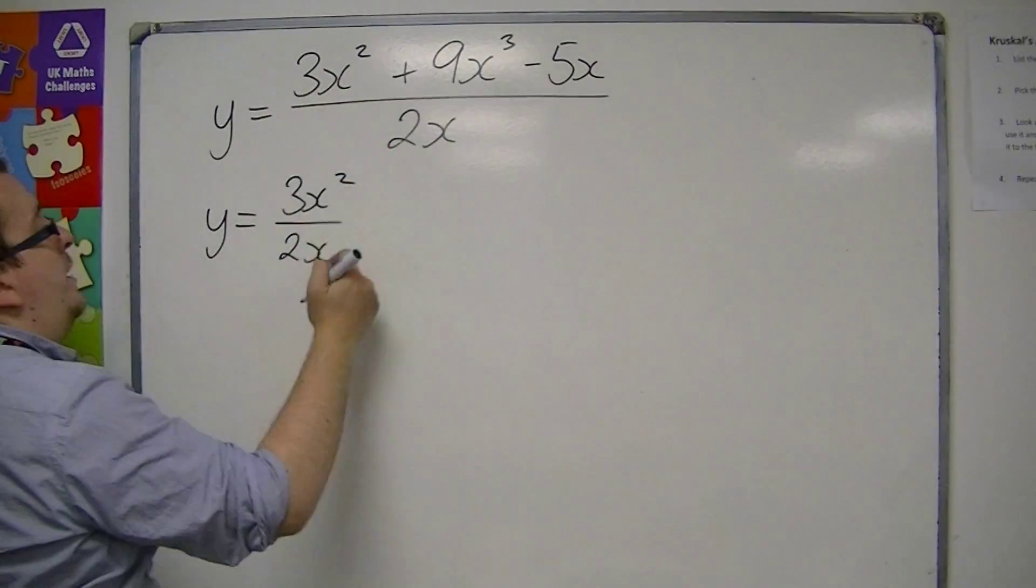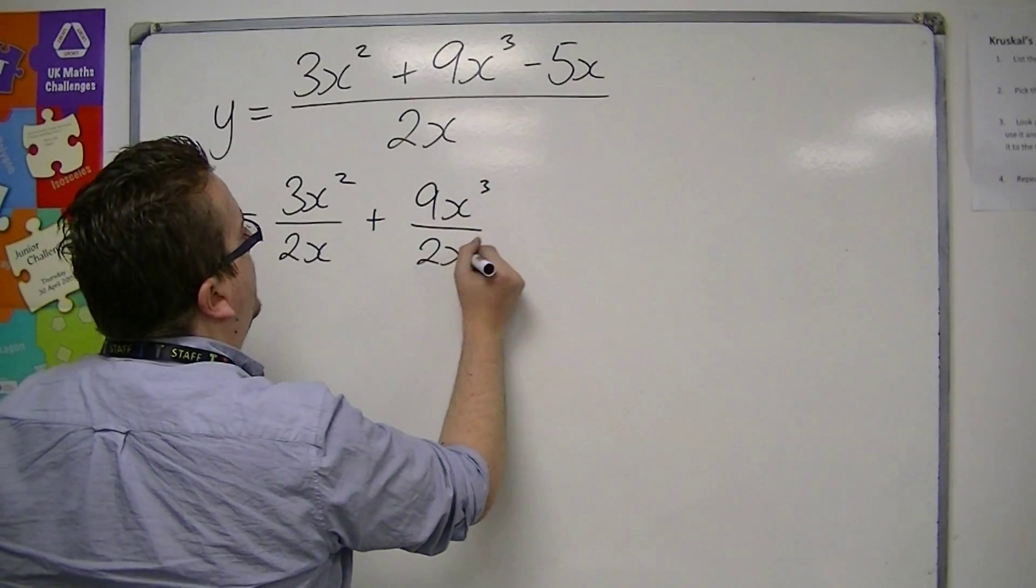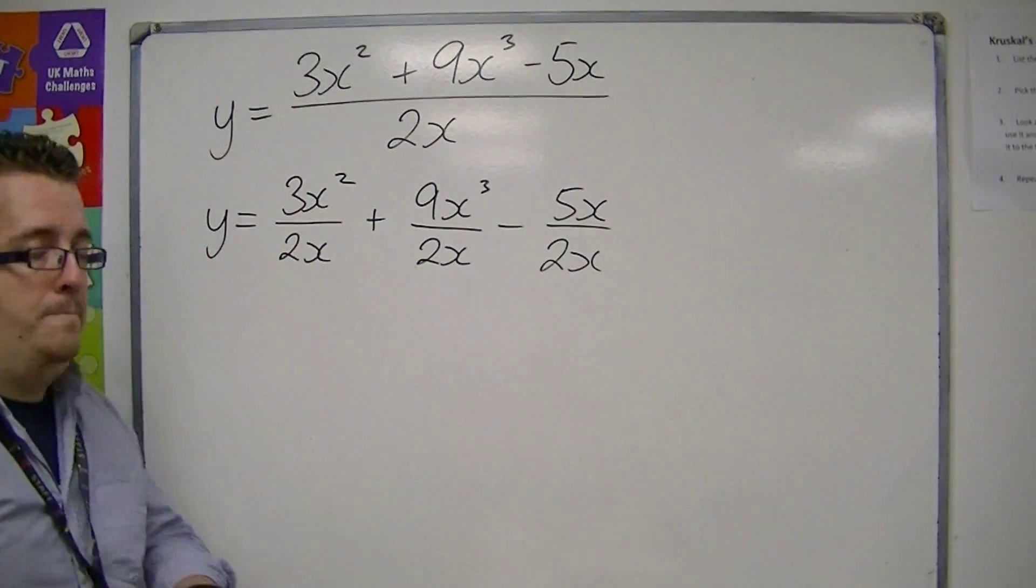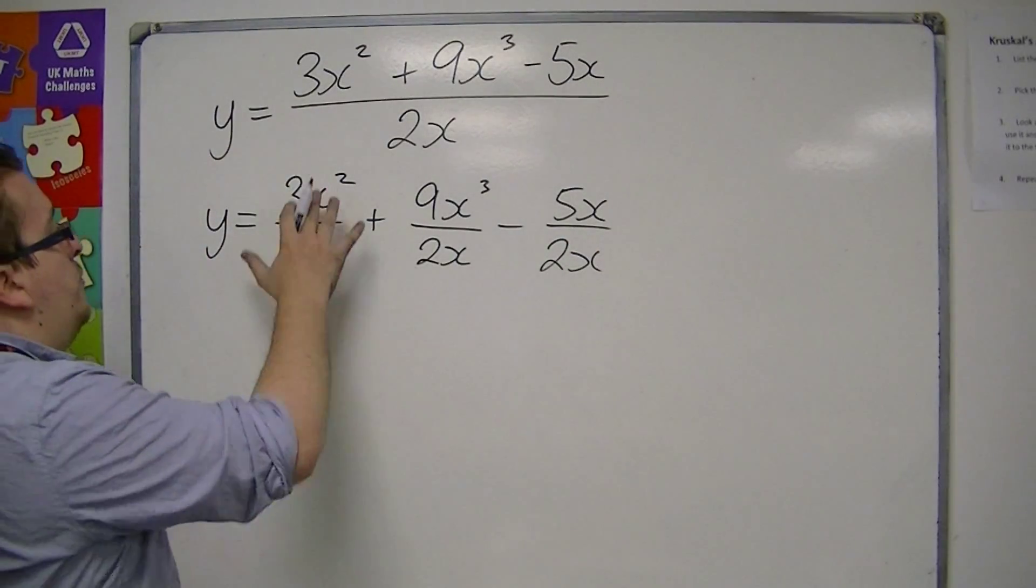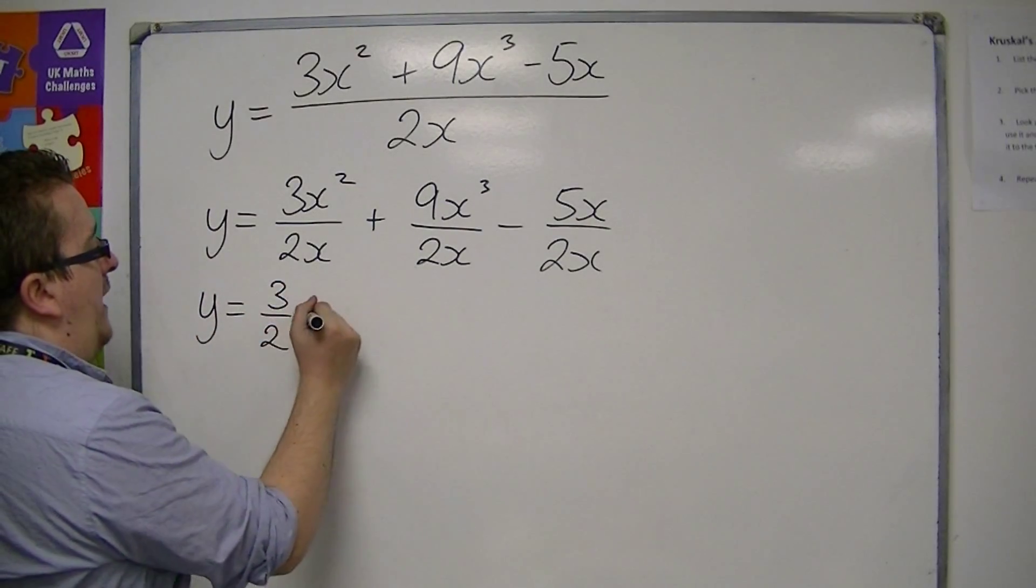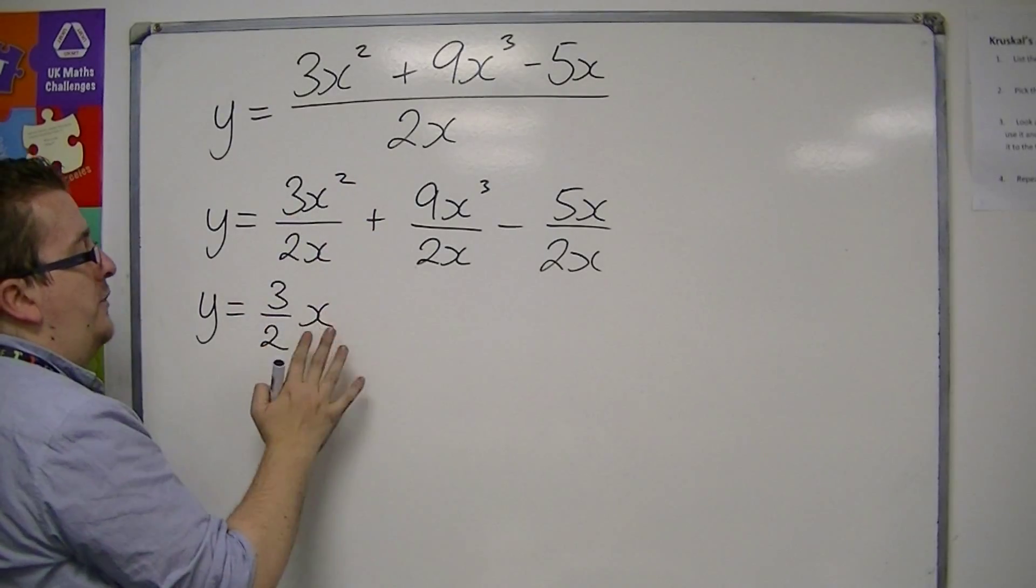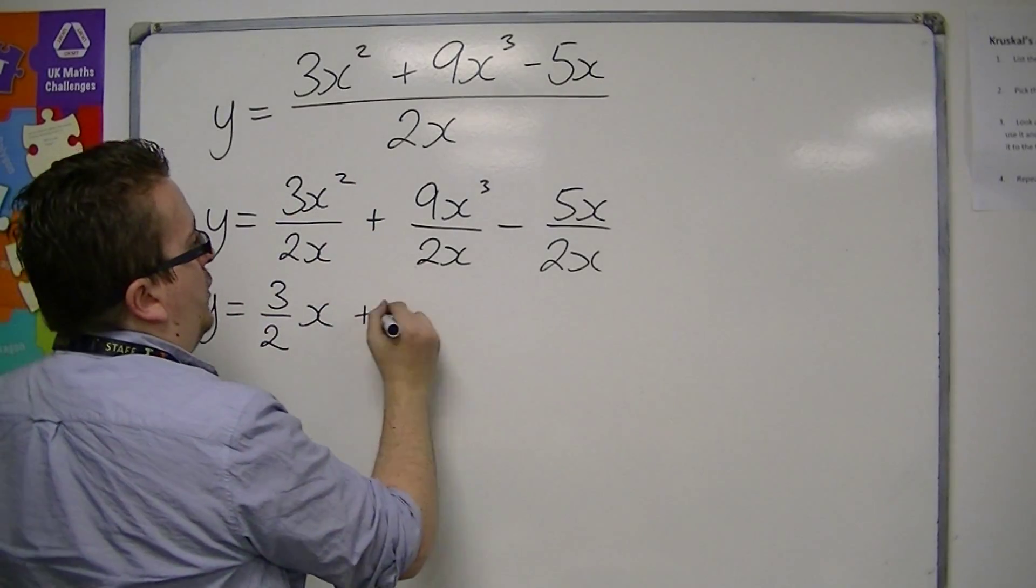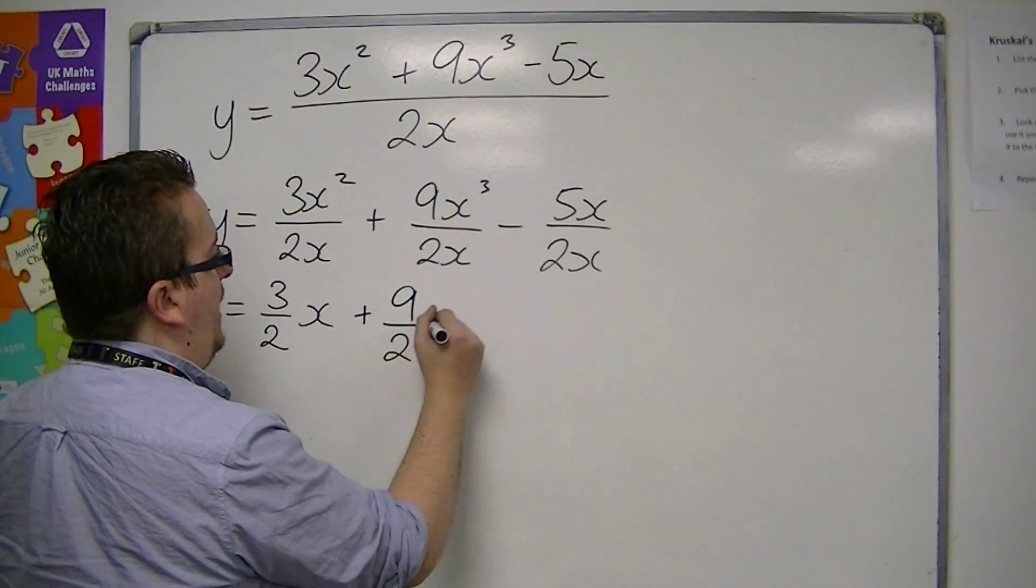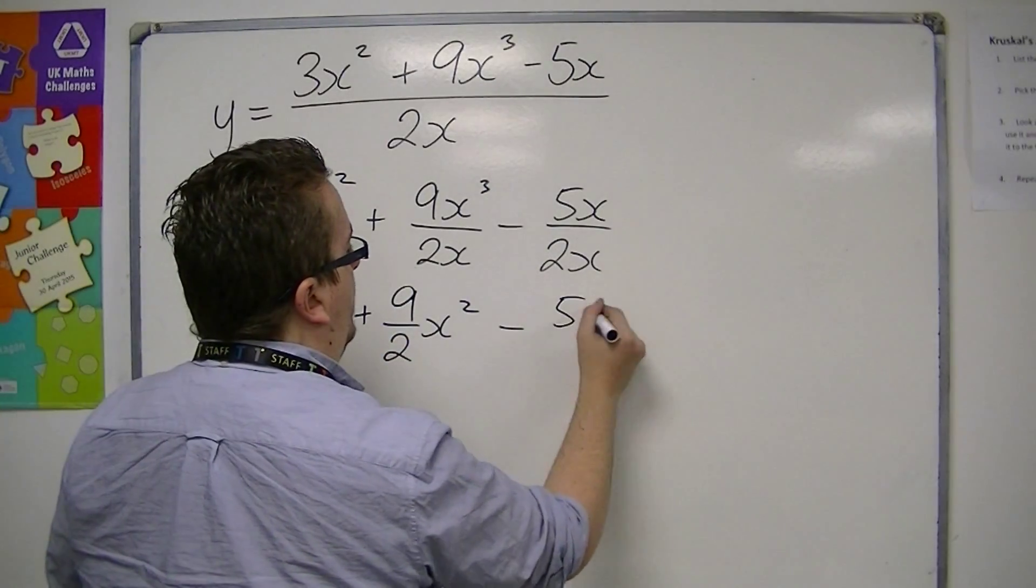So, you must split it up into individual terms. So you have 3x squared over 2x plus 9x cubed over 2x minus 5x over 2x. And then, we can write 3x squared over 2x as 3 halves x, because we have 3 over 2, and the x squared divided by x is just x. You've got x cubed divided by x is x squared, so you've got 9 halves x squared. And then, you've got x divided by x is 1, so you're just left with minus 5 halves.